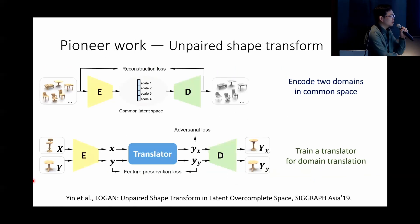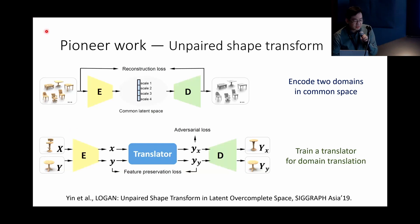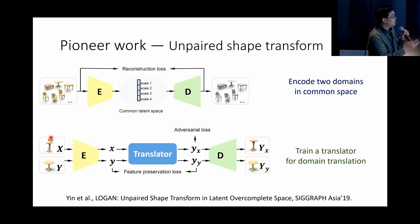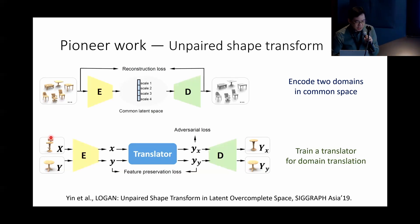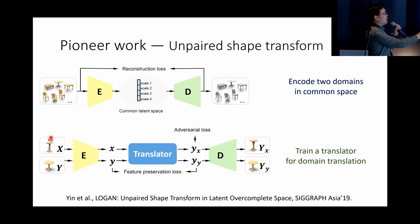Logan mainly deals with chairs and tables — the two biggest categories in the ShapeNet dataset. The idea is to encode chairs and tables into the same common latent space and then use a translator to transfer from chair to table and vice versa. It's impressive work that inspired us. However, we found some limitations: even with multi-scale technology, using a single generator to regenerate shapes produces defects — for instance, when transferring from an armless chair to an armchair counterpart, the chair leg count changes and some shapes look noisy.